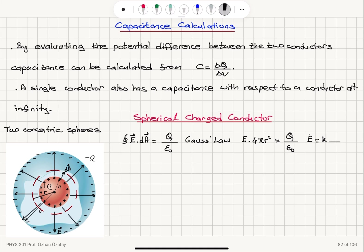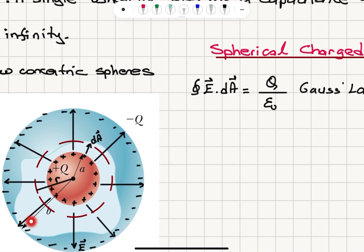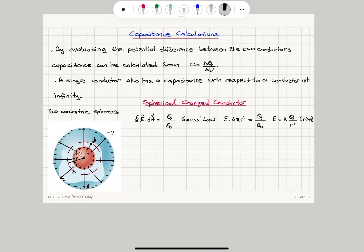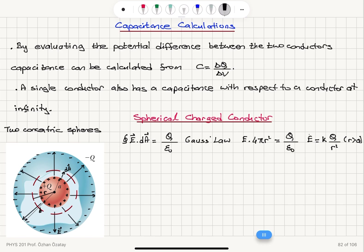This holds for r greater than a, and if I call the radius of the outer sphere b, then this is valid for r greater than a but also r less than b — that is, in between the two spheres. The potential V as a function of radial distance, going from b to r, is evaluated next.